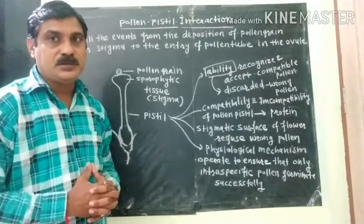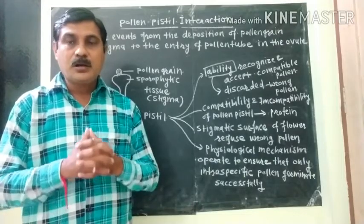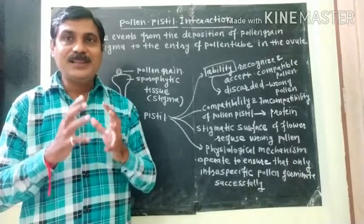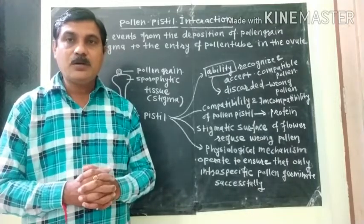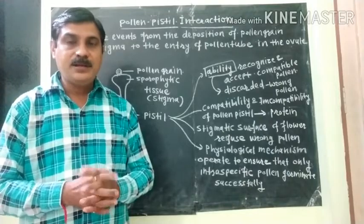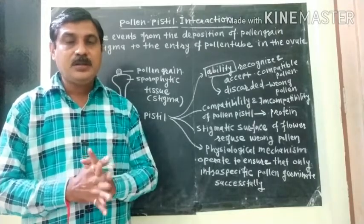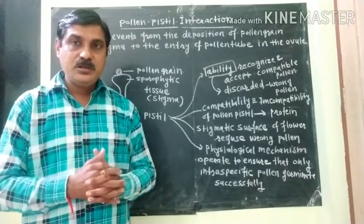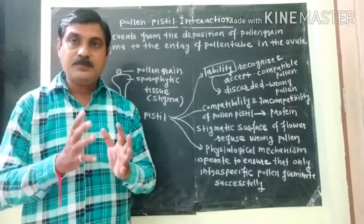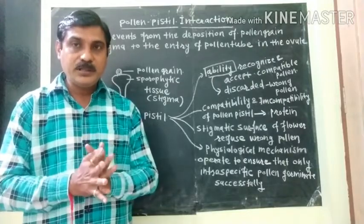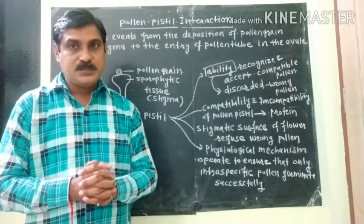During pollination, there is no guarantee that the right type or compatible pollen grain of the same species will land on the stigma. Often a wrong type or incompatible pollen grain will land on the stigma. Therefore, recognition of the right type of pollen grain by the pistil and then germination takes place — this process is known as pollen-pistil interaction.